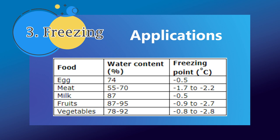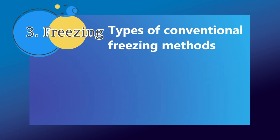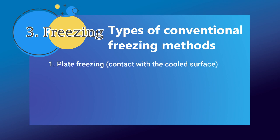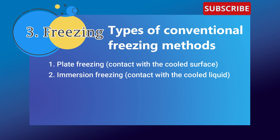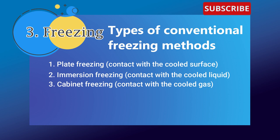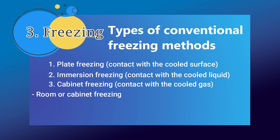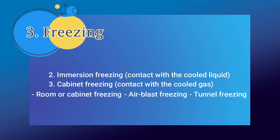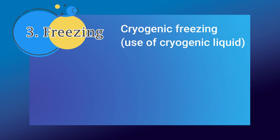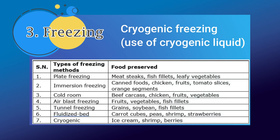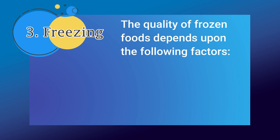With the help of this table you can see the applications of freezing for certain foods. The types of conventional freezing methods include: plate freezing, which is contact with a cold surface; immersion freezing, which is contact with cold liquid; and cabinet freezing, which is contact with cold gas. Several subtypes are also present: room or cabinet freezing, air blast freezing, tunnel freezing, spiral freezing, fluidized bed freezing, and belt freezing. There is also cryogenic freezing, which uses cryogenic liquid. A table shows which types of foods are preserved with which freezing methods.